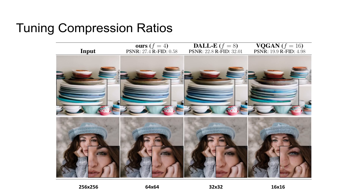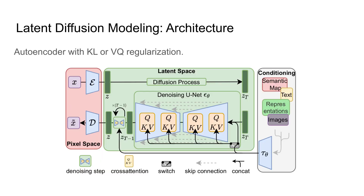Let me illustrate this with the following example. Here we see different reconstructions obtained by using different first-stage models. We see that we do not necessarily need to rely on the heavy spatial downsampling of methods that use autoregressive priors over the latent space. Here is an overview of the entire pipeline that we propose. The autoencoder can either be a VAE-type model with a very low KL regularization, such that we still have high-fidelity reconstructions guaranteed, or we also experiment with the VQGAN, where we absorb the quantization layer into the decoder and train on pre-quantized latent codes.